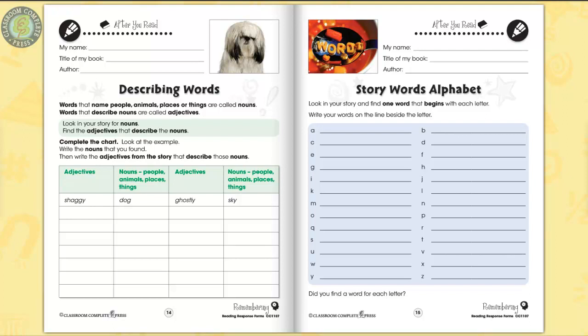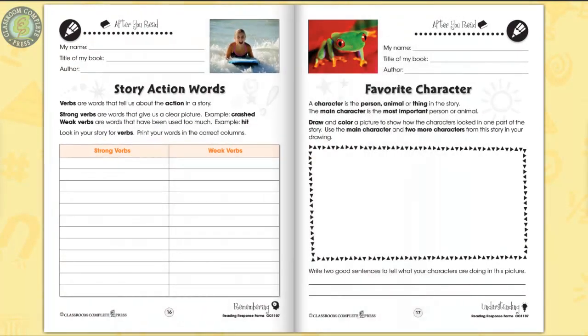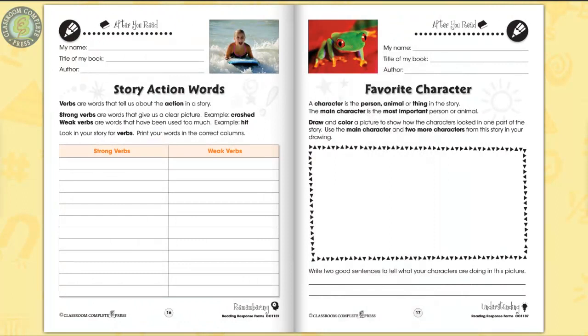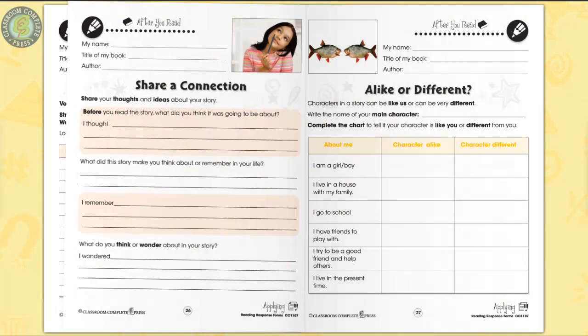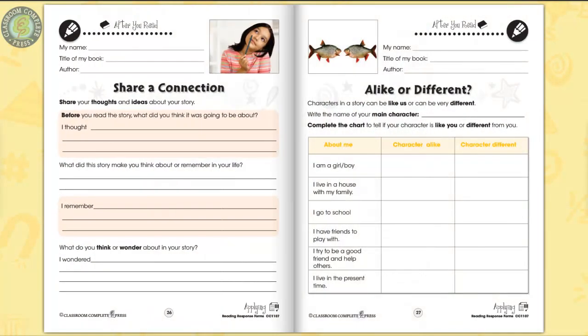Identify different describing words to show what you remember from the story. Draw your favorite character based on what you understood from the reading. Apply what you know by comparing a character from the book to yourself.